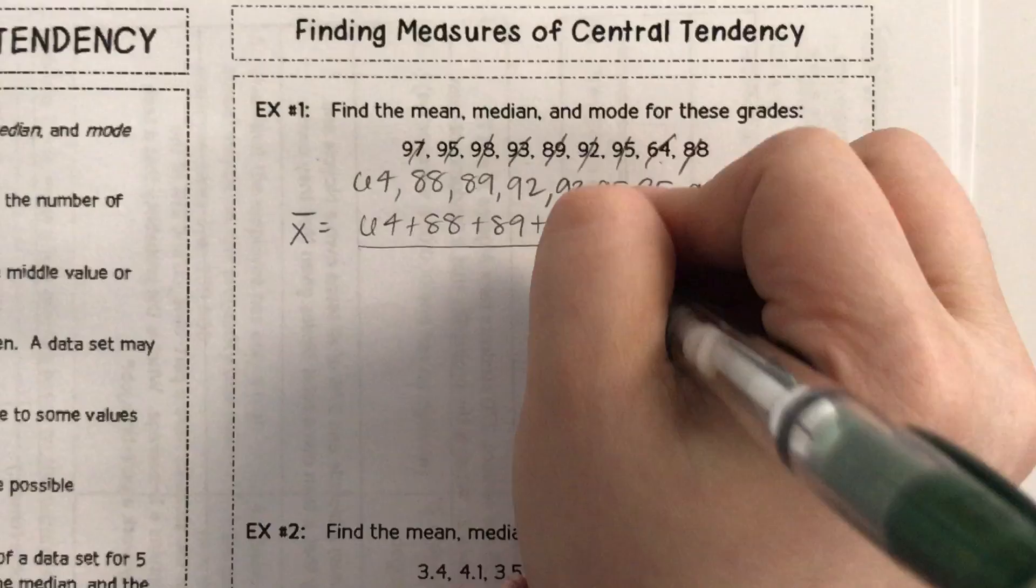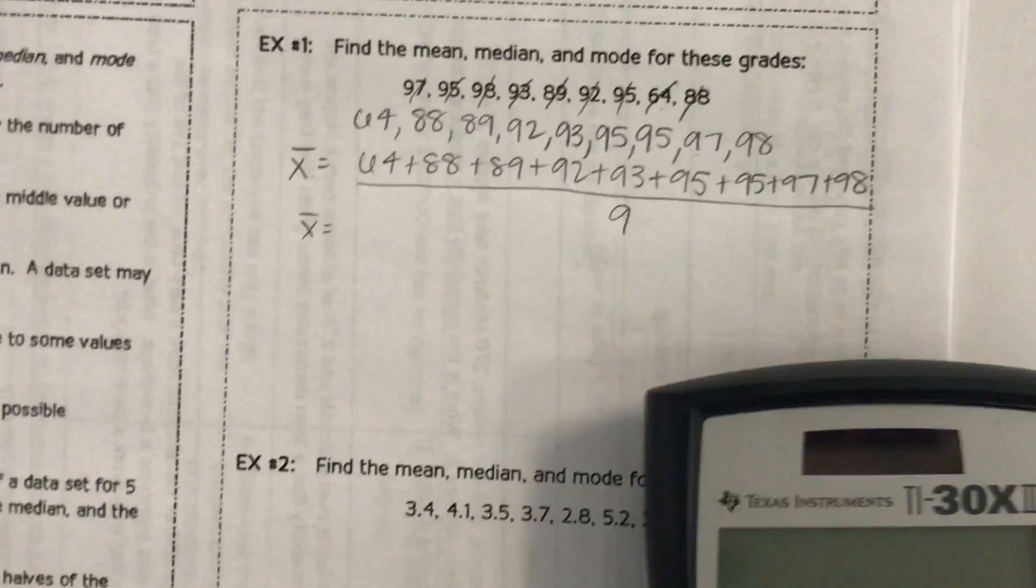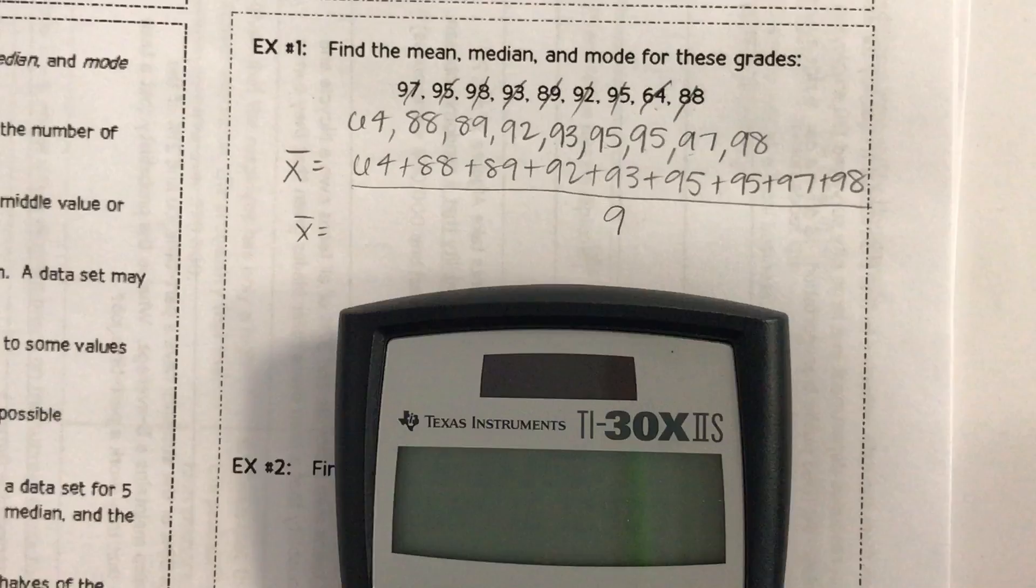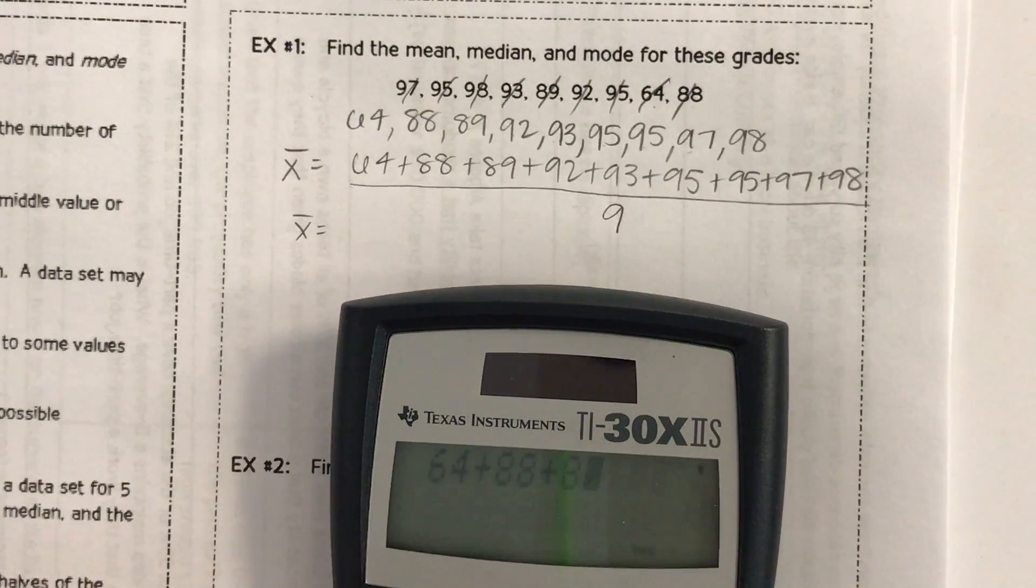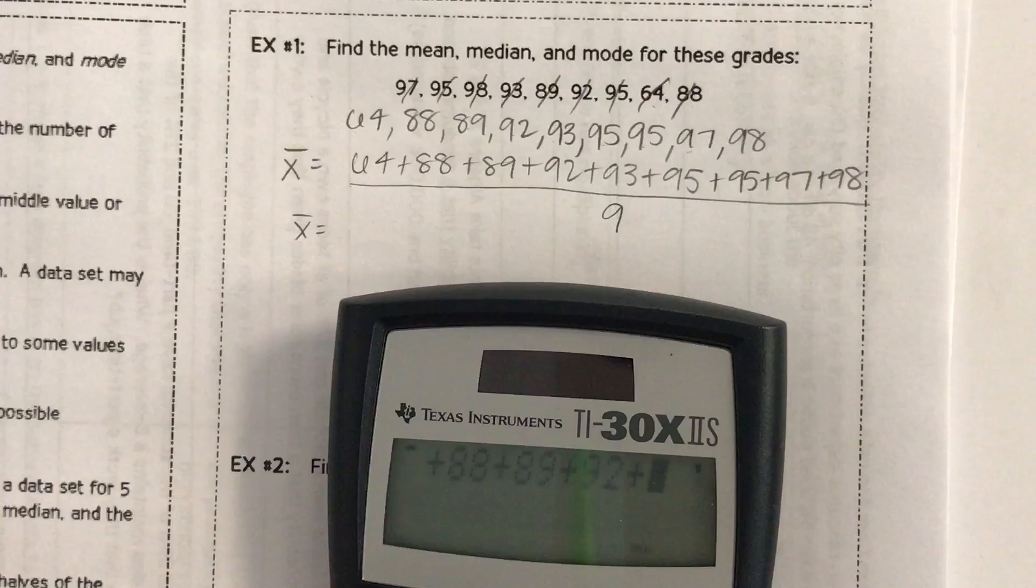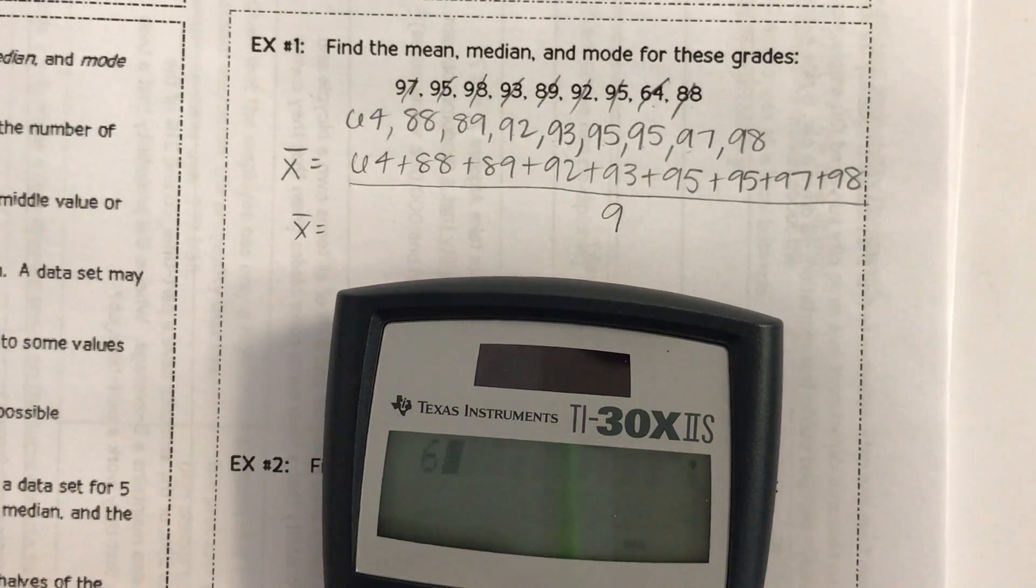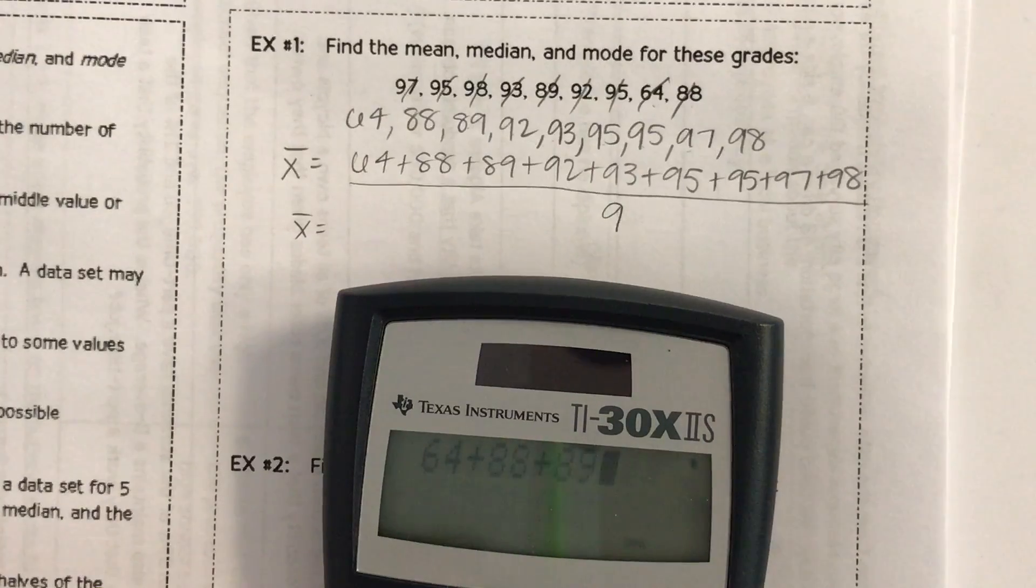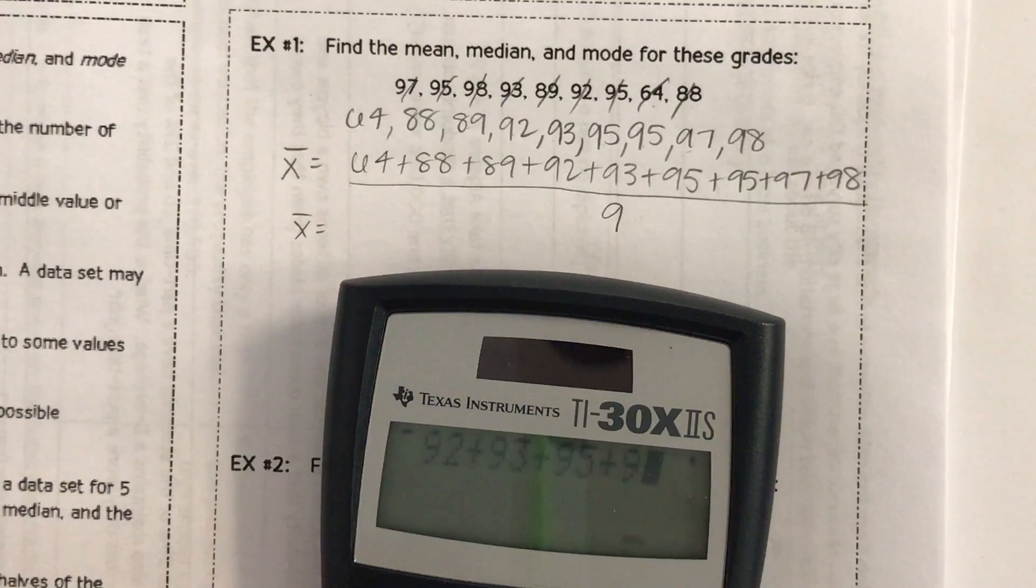So we have 64 plus 88 plus 89 plus 92 plus 93 plus 95 plus 95 plus 97 plus 98.